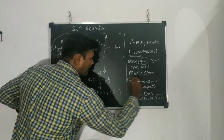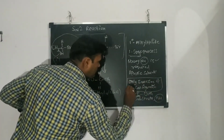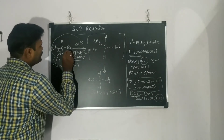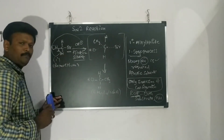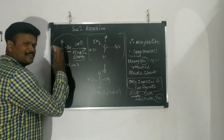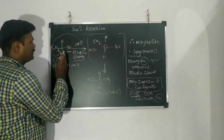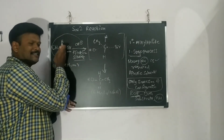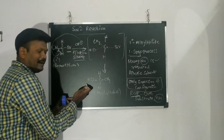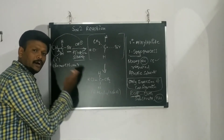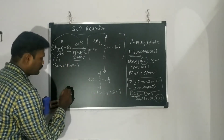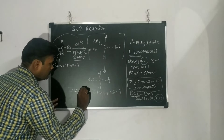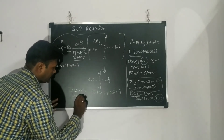A very important feature of SN2 is that only inversion of configuration occurs. The spatial arrangement of the carbon changes — Br was attached on one side (right side) of the carbon, but now OH is attached on the opposite side (left side). This is called the inversion product.